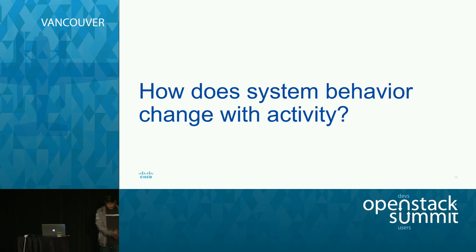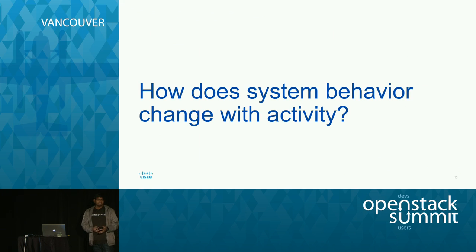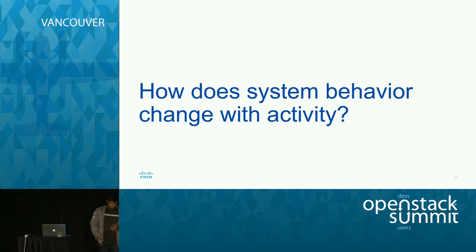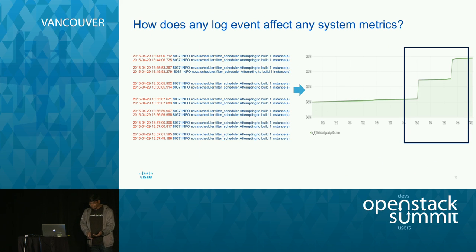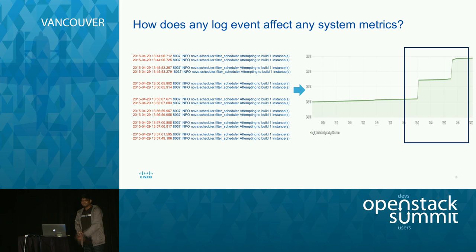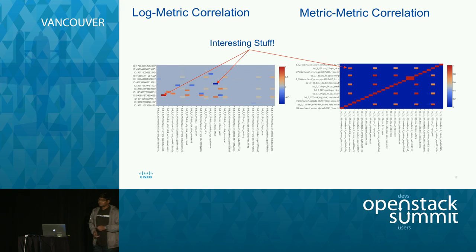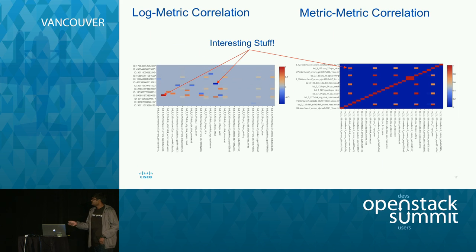A lot of people do log analysis, some people do metric analysis, and when doing metric analysis, if they see some spike or change, they might consider it an anomaly. But you can never be sure unless you are also looking at the logs and the events that are going on. So you need to correlate the logs to metrics, and how we correlated them is by converting the logs into metrics — creating a time series and taking their frequency in a period. When we correlated them, we found these interesting correlation matrices, with some logs highly correlated to some metrics.